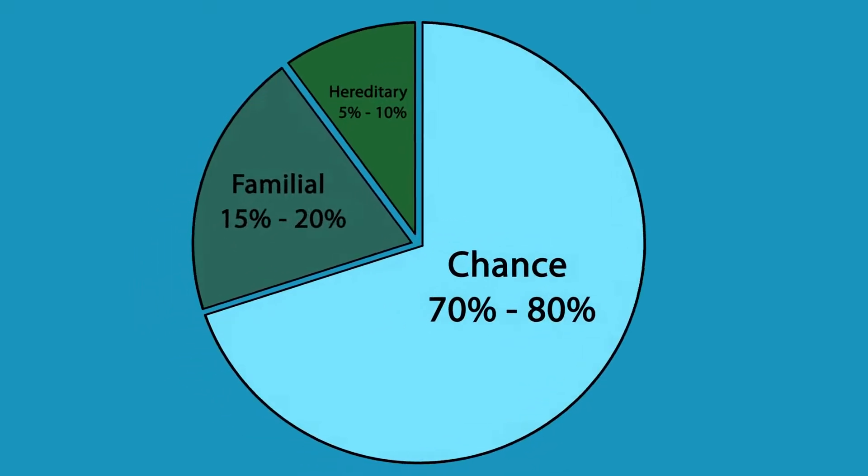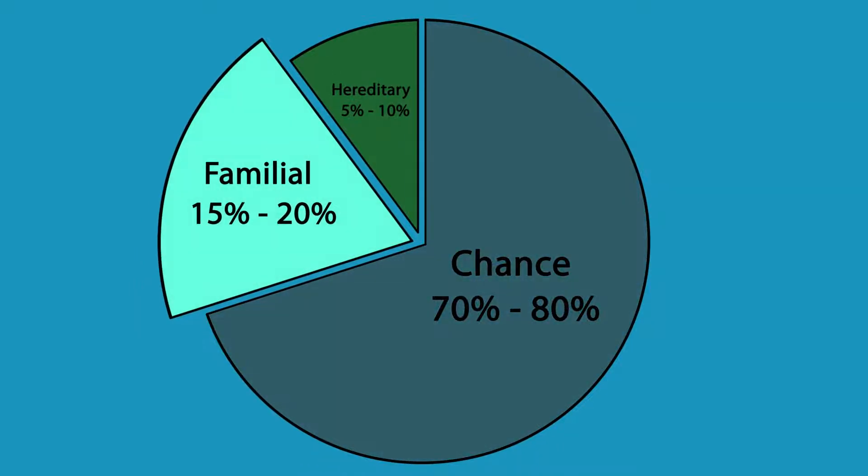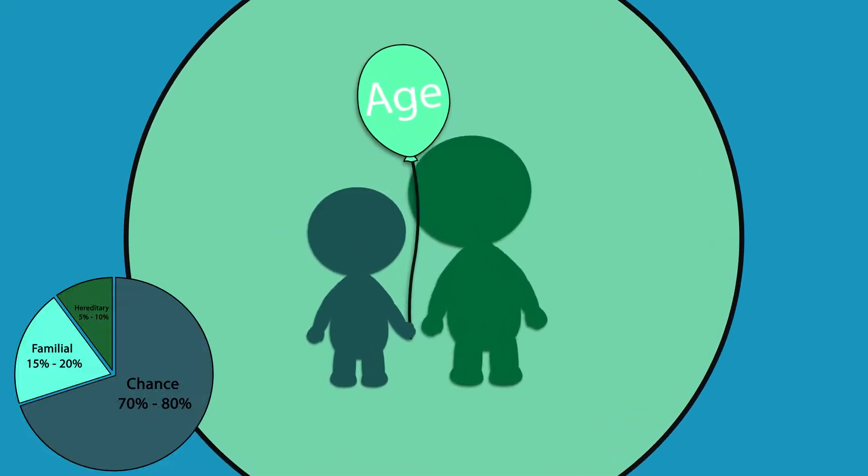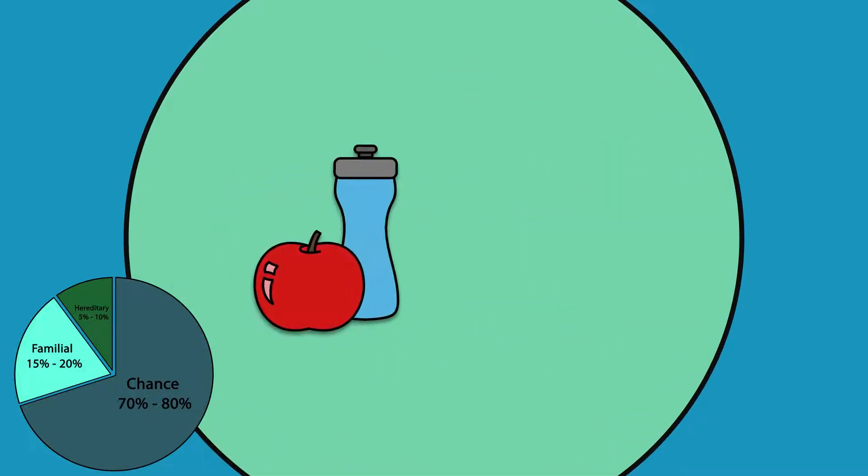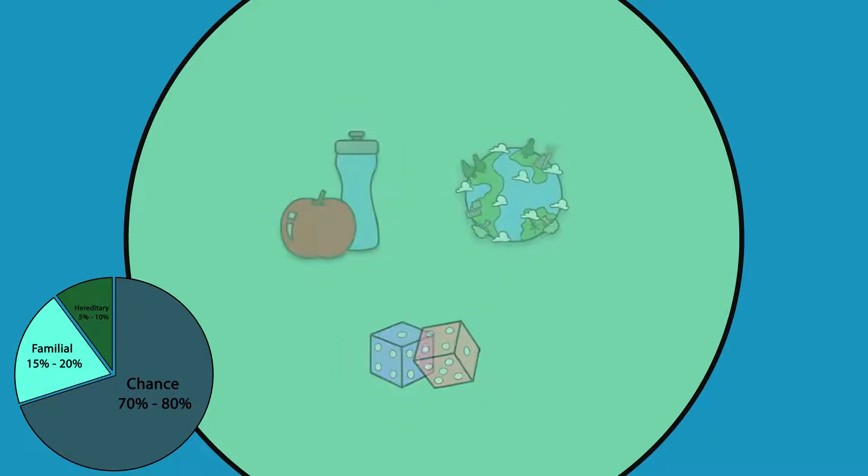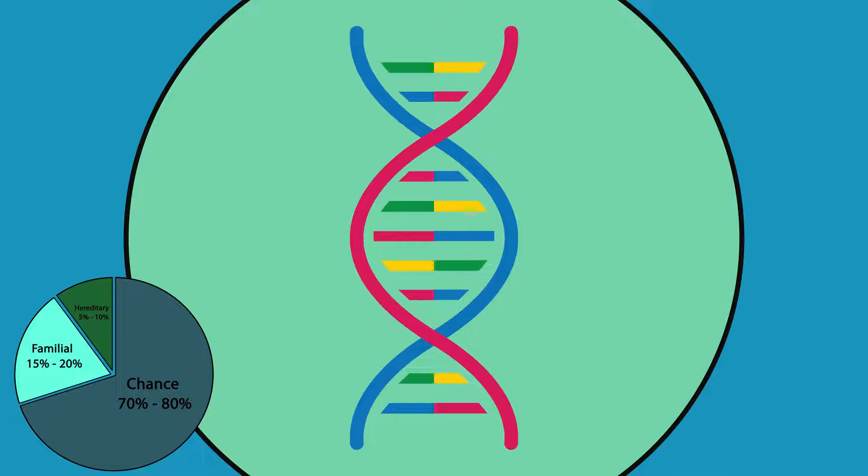About 15 to 20% of cancers have a familial cause. Familial cancers can also be caused by age, lifestyle, environment, and chance, just like sporadic cancers. But small genetic factors may also play a role in developing familial cancer.